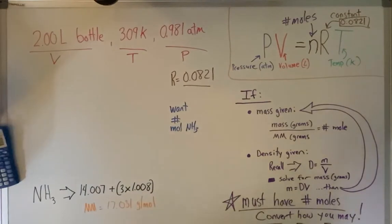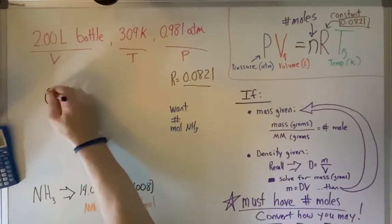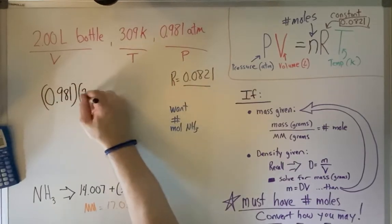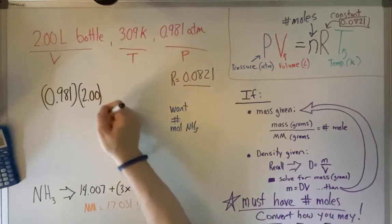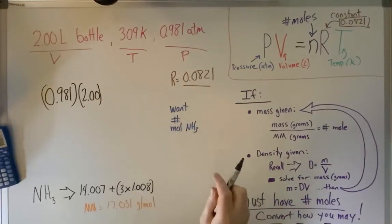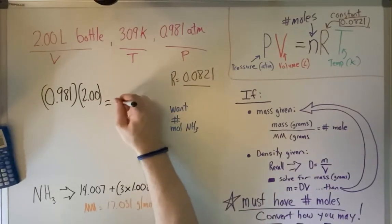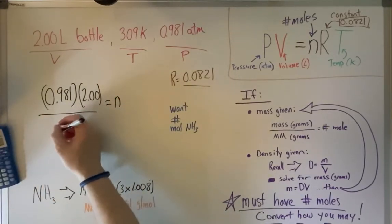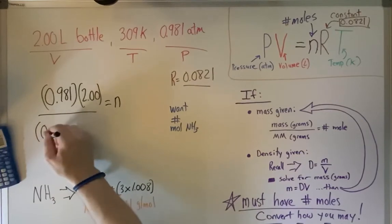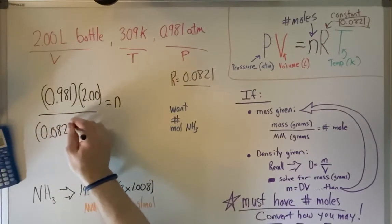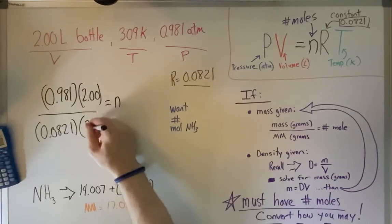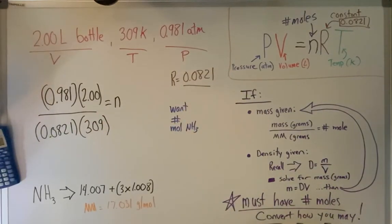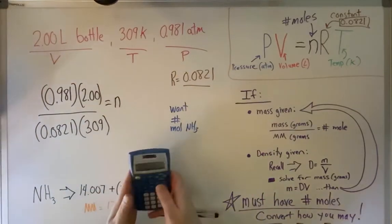So in this case, we're just going to plug and play everything into the equation. Pressure in this case is going to be 0.981. Volume will be 2.00. We're solving for N. So algebraically, I'm dividing R and T underneath. So the constant, which is 0.0821, and then the temperature, which is 309 Kelvin.